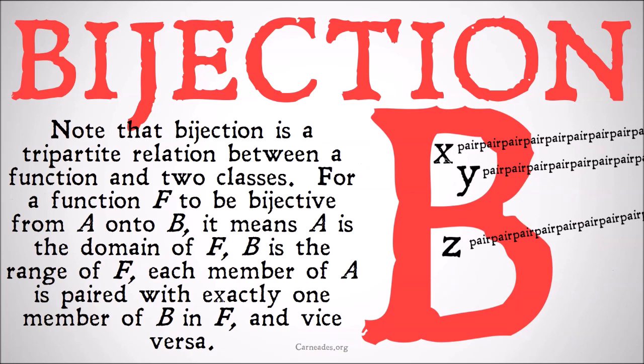Note that bijection is a tripartite relation between a function and two classes. For a function f to be bijective from a onto b, it means that a is the domain of f, b is the range of f, and each member of a is paired with exactly one and only one member of b in f, and vice versa.